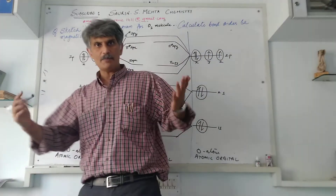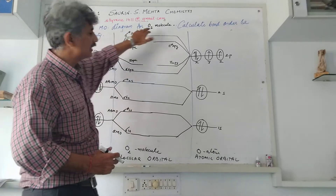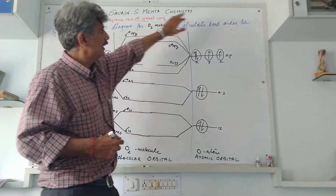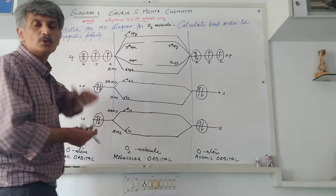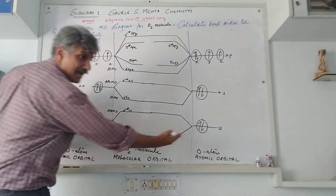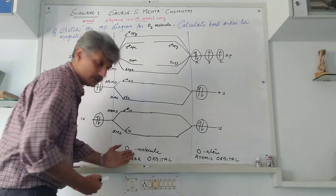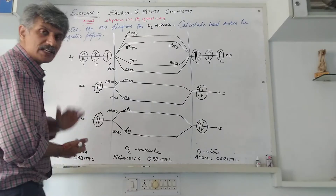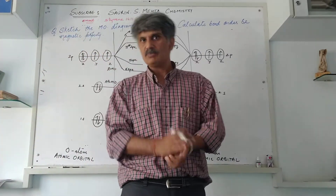We are back again. This time we are going to deal with the MO diagram for the oxygen molecule. In the previous lecture we took the nitrogen molecule. We will simultaneously calculate its bond order and determine its magnetic property. I've already formulated the oxygen atoms on either side with the atomic orbital section. In the molecular orbital section I've tried to form the O2 molecule. As far as oxygen atom is concerned, its atomic number is eight electrons.